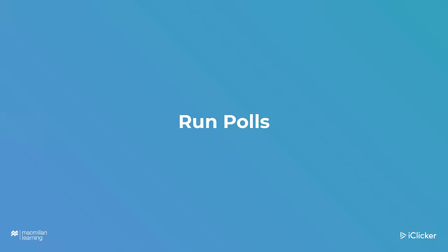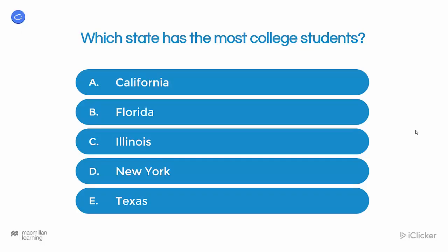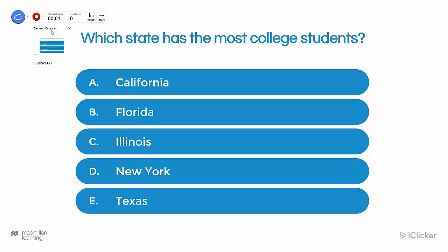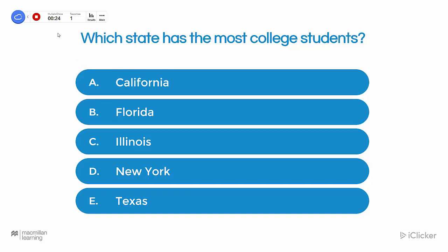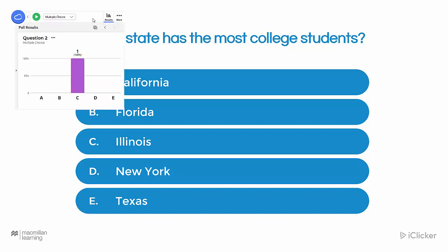Now you're ready to ask your students iClicker polling questions. When you come to a polling question in your lecture deck, simply click on the cloud icon to expand it, and then click on Polling. Next, select the type of question that you are going to ask, and then when you are ready, click the play button to start the question. When I click the green button, it takes a capture of my desktop and sends it to students so they can easily see the question as they answer. Here I can see how much time has passed on the question, I can see how many responses I've gotten, and I can preview results. When I'm satisfied with how much time has passed, I can click the stop button. Then if I'd like to grade the question, I click results again and simply touch where the correct answer is to mark it as correct.